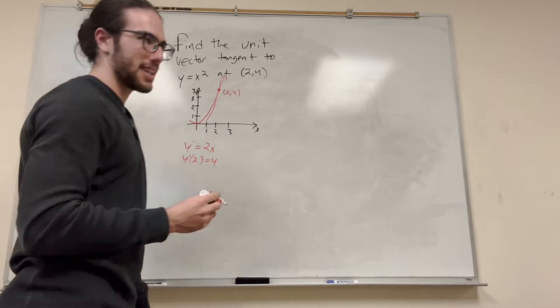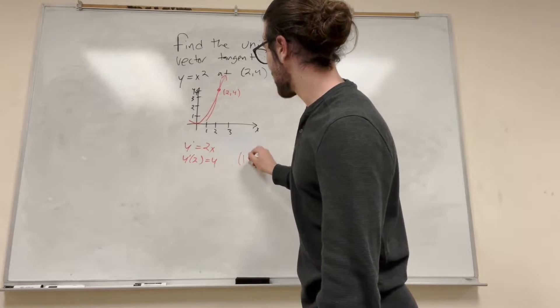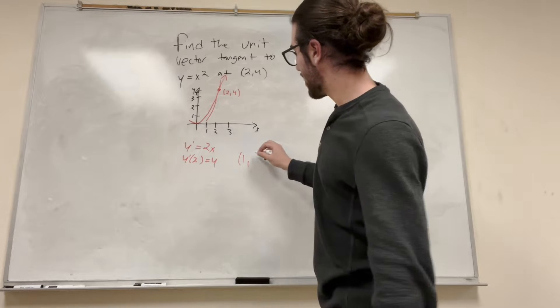So what this means is basically this is the slope of our line. So you can write this as you go 1 over in x, and it goes up 4.